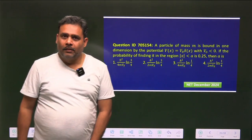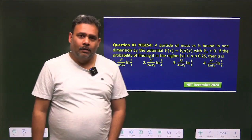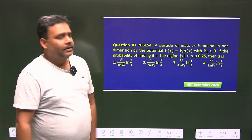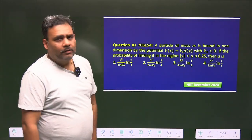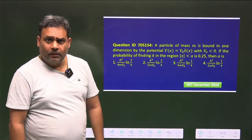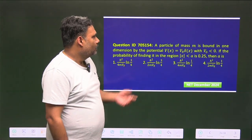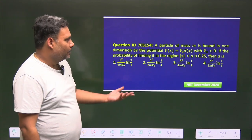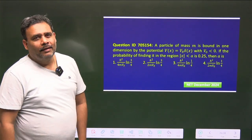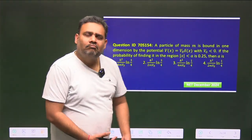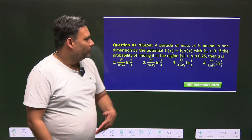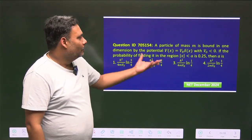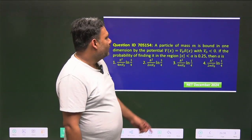Hello students, let's solve one more problem from quantum mechanics. This is from the CSIR NET 2024 December examination, question number 705154, and it is from the Dirac delta potential. If you know the theory of the Dirac delta, you can easily solve this problem.